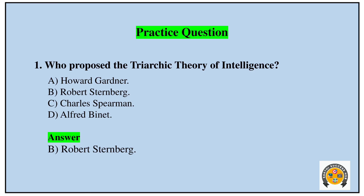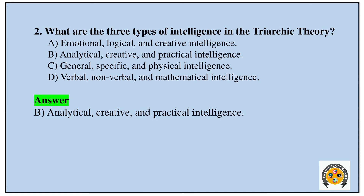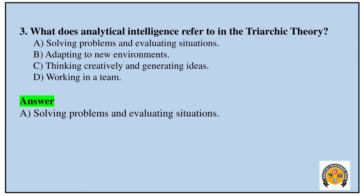Practice question: Who proposed the Triarchic Theory of Intelligence? Robert Sternberg. What are the three types of intelligence in the Triarchic Theory? Analytic, creative, and practical intelligence. What does analytical intelligence refer to? Analytical intelligence is about solving problems and evaluating situations.